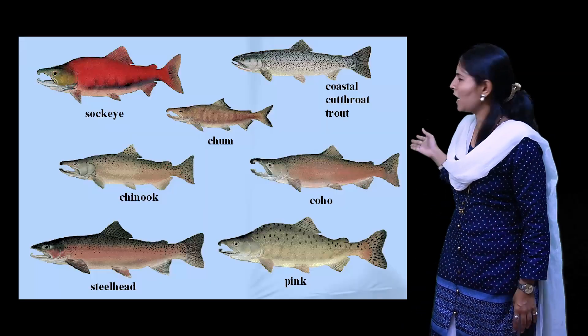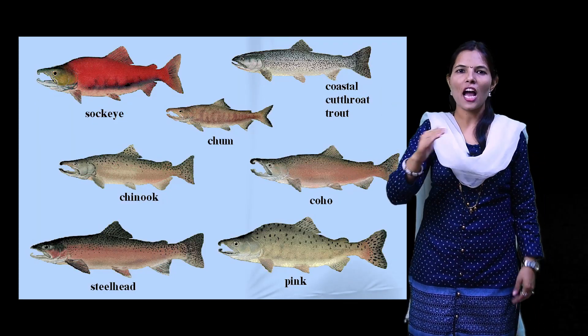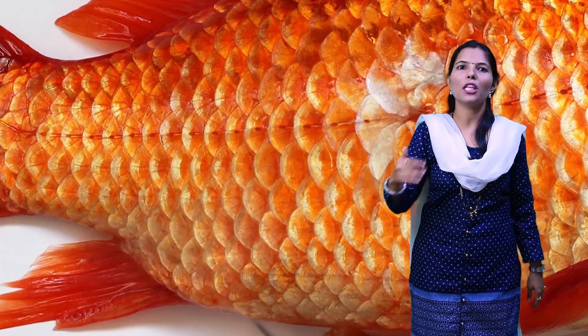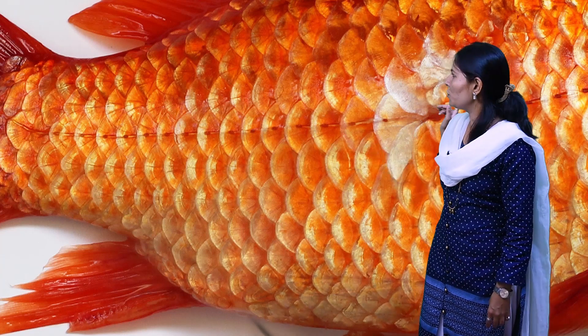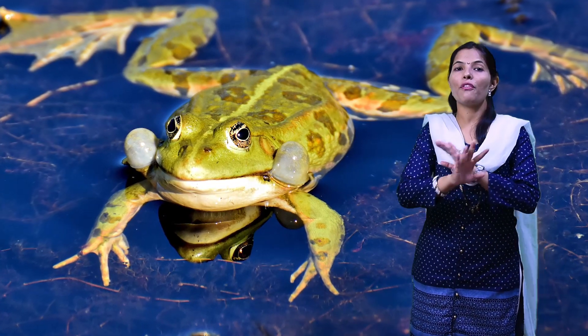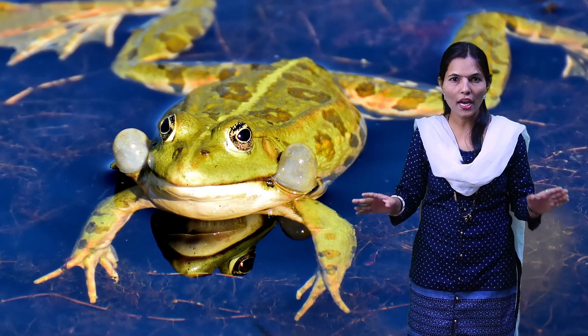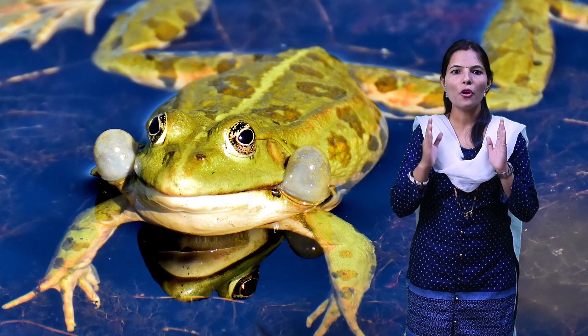When you look at fishes, you can observe the scales on their skin. These scales help them swim in the water. In the second picture, you can also observe the scales clearly. I think all of you are clear that fishes are having scales and fins on their body.